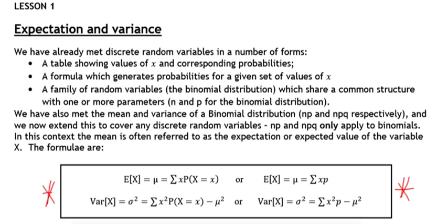Essentially, to work out the expectation we do the sum of the x values times the probabilities. To work out the variance we're going to do the sum of the x squared values times the probabilities, take away the mean squared.